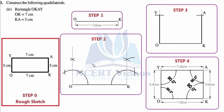Moving to the actual construction using real measurements. First, we consider line segment OK. With the help of a ruler and pencil, we construct a line segment OK with a dimension of 7 centimeters. We mark this as Step 1 and write its vertices as O and K. Pause and try to construct it by your own.